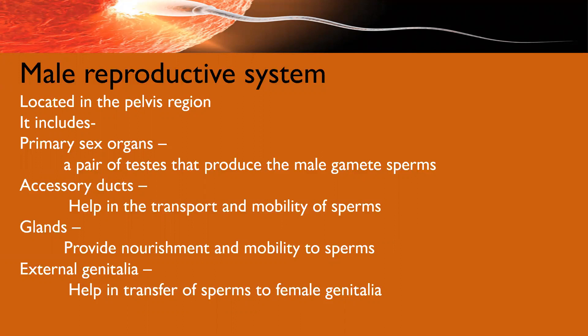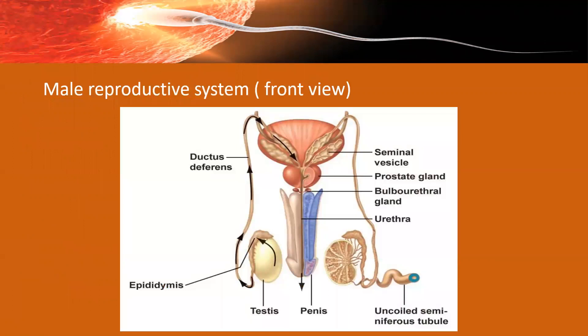Accessory ducts are those which are not directly involved in the formation of gametes, but are very important for the nourishment, transport, and maturation of gametes. Glands produce secretions that provide nourishment and motility to the sperms. External genitalia in the male is the penis, which is important for the transfer of sperm into the female genitalia.